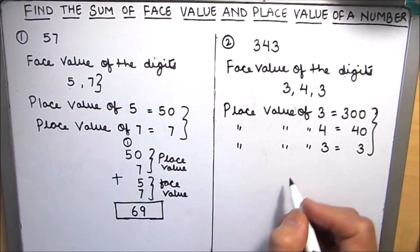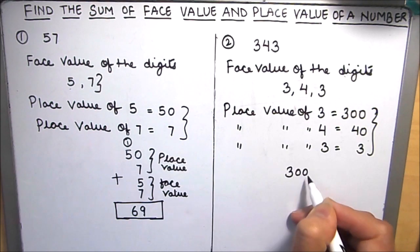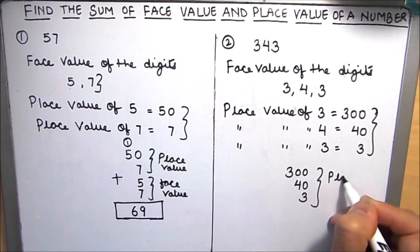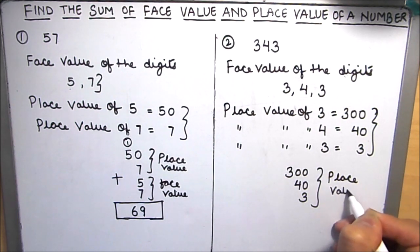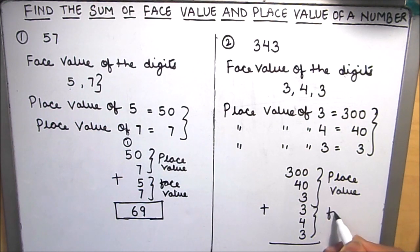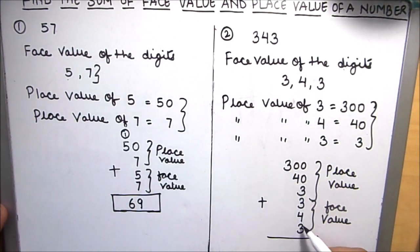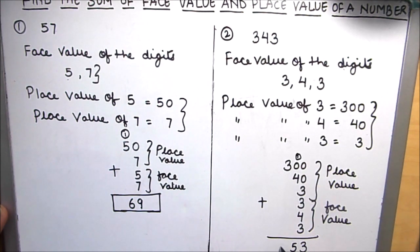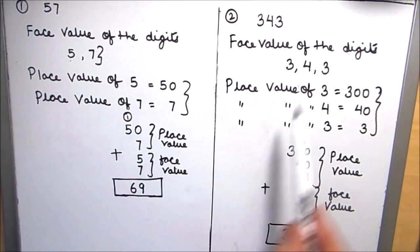Now let's find the sum of the face value and place value: 300 plus 40 plus 3 — these are the place values — plus 3 plus 4 plus 3 — these are the face values. This comes out to be 353. This is the sum of the face value and place value of the digits in the number 343.